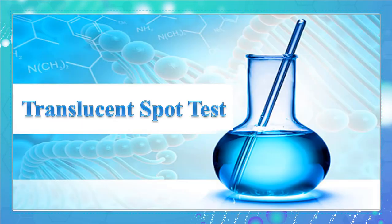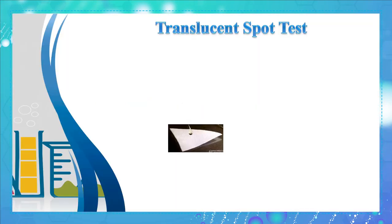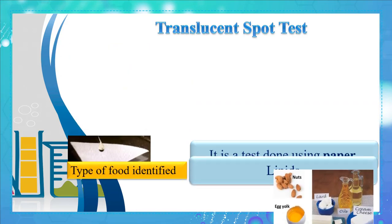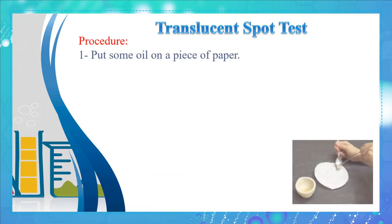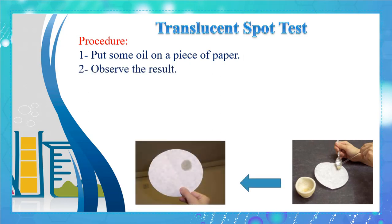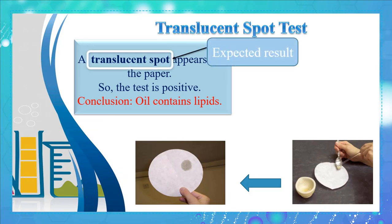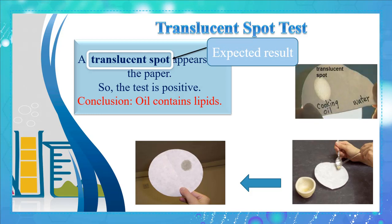The fourth identification test is the translucent spot test. It is a test done using paper. The type of food identified is lipids. Procedure: put some oil on a piece of paper and observe the result. A translucent spot appears on the paper. The translucent spot is the expected result, so the test is positive and we conclude that oil contains lipids.